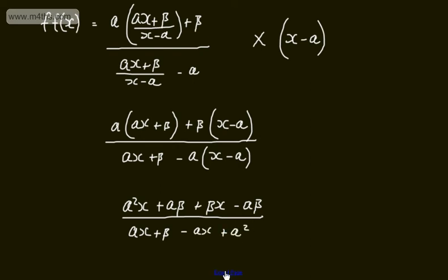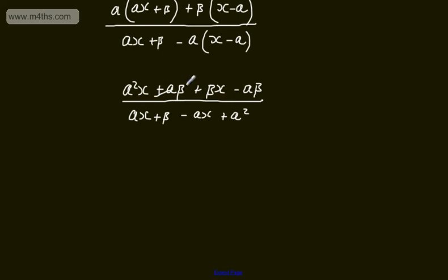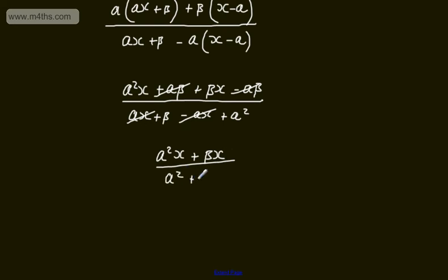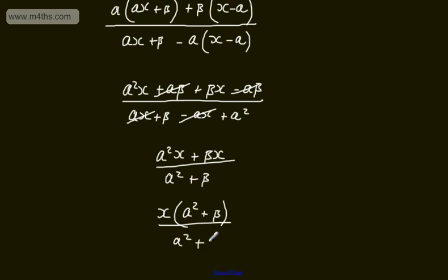So if we consider what's going to cancel, we've got plus alpha beta minus alpha beta, and alpha x minus alpha x. So in the numerator I've got alpha squared x plus beta x. In the denominator, rewriting, alpha squared plus beta. I can factor an x out of the numerator, giving x times alpha squared plus beta.